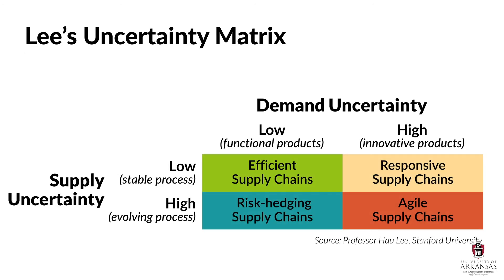Dr. Li's uncertainty matrix highlights the idea that supply chain strategies cannot be thought of in terms of just addressing demand uncertainty. That unidimensional focus is flawed and can lead to all kinds of cost or service problems. Therefore, as supply chain managers, we also need to simultaneously consider supply uncertainty.